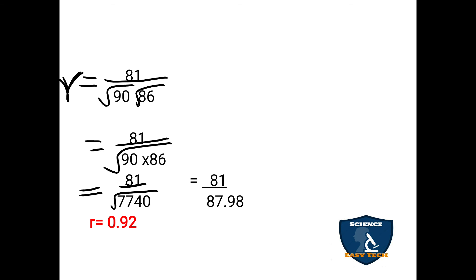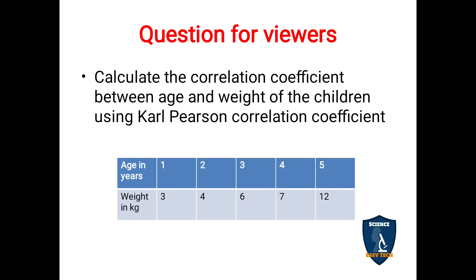In this way, you find the correlation coefficient using the Karl Pearson method. There are many formulas but don't get confused — this is the basic formula. This answer shows that there is a high degree of correlation between birth rate and death rate because r = 0.92. Now there is a question for viewers: Calculate the correlation coefficient between age and weight of children using the Karl Pearson method — it is a simple sum for you to practice.